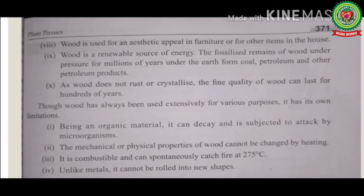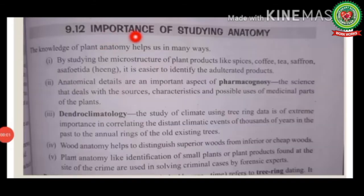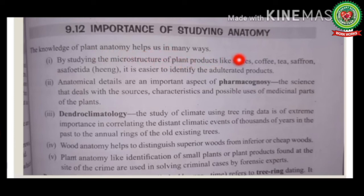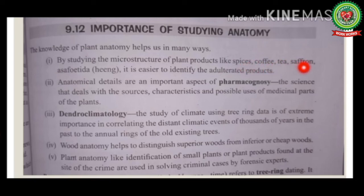The next topic is the importance of studying anatomy. The knowledge of plant anatomy helps us in many ways. By studying the microstructure of plant products like spices, coffee, tea, and saffron, it becomes easier to identify adulterated products.